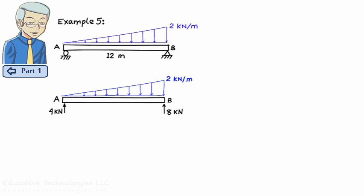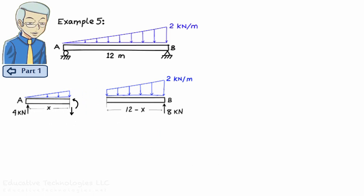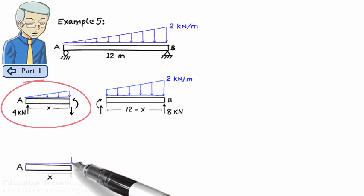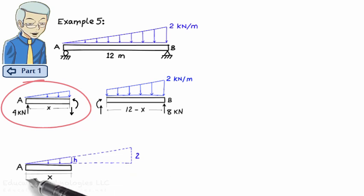To write shear and moment equations, we need to cut the beam at an arbitrary distance x from the left end of the beam. We can now formulate the shear and moment equations by writing the equilibrium equations for the left segment. In order to do that, however, we need to know the intensity of the load at the cut point. Let's refer to it as H.